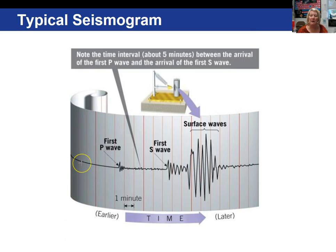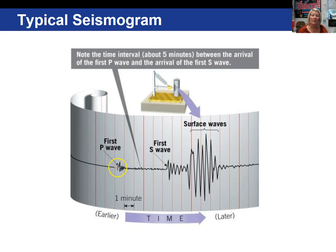Here's a picture of a seismogram. The first wave is the P wave, and each one of these lines represents one minute of time. This becomes important when calculating the origination location of an earthquake, because it is based on the time interval between the arrival of the P wave and the arrival of the S wave. In this example, the P wave starts here, and counting the minutes — one, two, three, four, five — there is a five-minute gap between the P and S wave. That interval is critical when calculating the location of an earthquake.